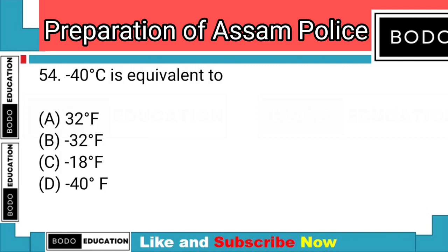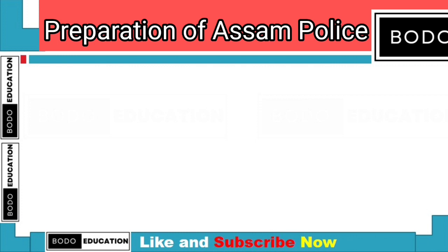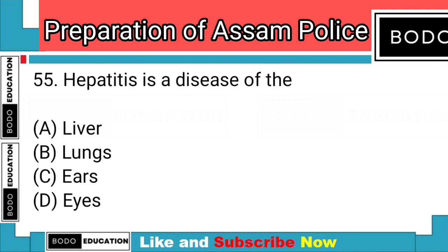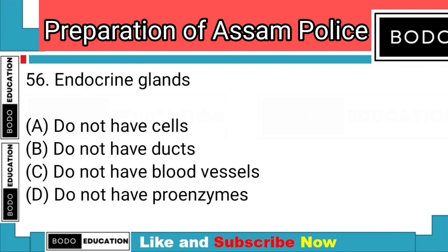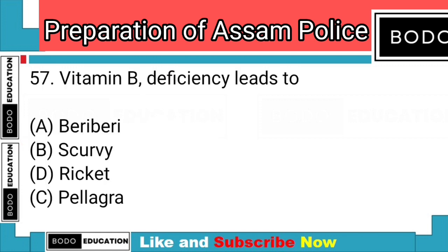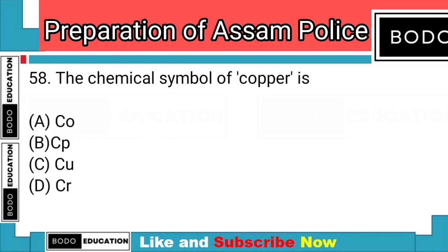Question number 54: Minus 40 degrees Celsius is equivalent to? Answer: Option D — minus 40 degrees Fahrenheit. Question number 55: Hepatitis is a disease of? Answer: Option A — Liver. Question number 56: Endocrine glands? Answer: Option B — do not have ducts. Question number 57: Vitamin B deficiency leads to? Answer: Option A — Beriberi.